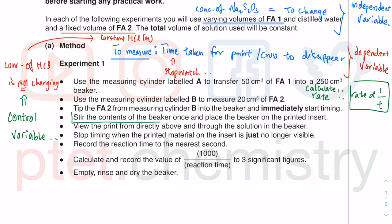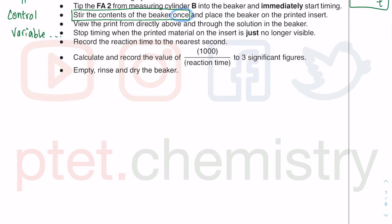The question says 'stir the contents of the beaker once.' I've seen students doing this experiment and stirring multiple times. Your supervisor will be doing the actual practical, so follow the instruction. It was stated in the syllabus that candidates should be able to read the instructions. If you stir more than once, you're going to affect the rate in terms of how often the particles collide, and therefore your result might differ from your supervisor's — which will result in loss of accuracy marks.